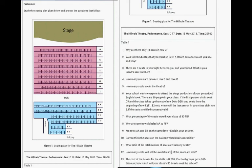Your school wants to attend this stage production. You have 30 people in your class. If the first person sits in D5 and the class takes up row D to D20 and seats from the beginning of E to E10, where will the last person sit if the seats are filled consecutively, which means right next to each other? What percentage of the seats will your class of 30 fill? Why are some rows labeled A to F? Do you think the seats on the balcony are wheelchair accessible?